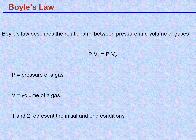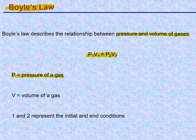Boyle's law states P1 V1 equals P2 V2 — the relationship between pressure and volume. Pressure will change as volume changes, and P1 V1 of one condition will equal P2 V2 of the other condition as the volume of the space changes.